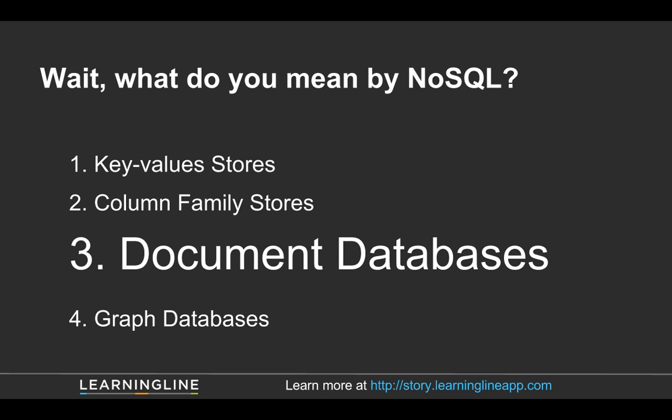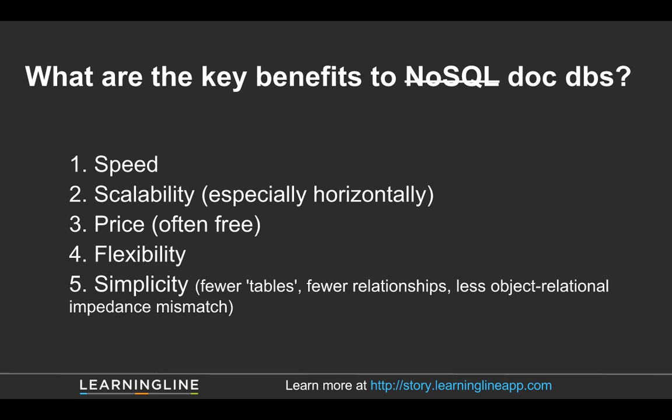So when I say why you want to choose NoSQL, let's talk about really why you want to choose a document database. This could be MongoDB, could be Couch, could be Raven, those types of things. So what are some of the key benefits to document databases? Well, there's obviously speed. There's been a lot written about how fast these databases are. For the sake of this discussion, assume they're at least as fast as relational databases — but I can tell you they are faster.